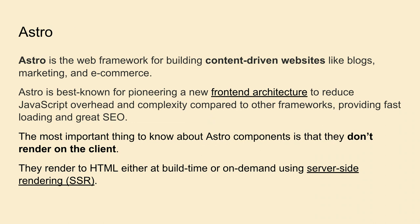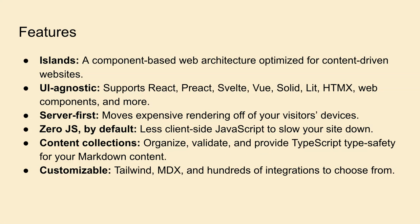Astro is one of the newest web frameworks for content-driven websites. It's specifically used for static applications and its target is to ship zero JavaScript — the less JavaScript it provides to the client, the better. It has these features: it's island-based, which is a web component architecture; it's UI-agnostic, so you can use React, Svelte, or other frameworks; it's server-first, so the most expensive tasks are done on the server in the build phase and then it provides HTML, leading to zero JS by default. It also has content collections where you can use MDX files, and is customizable with Tailwind and other integrations.